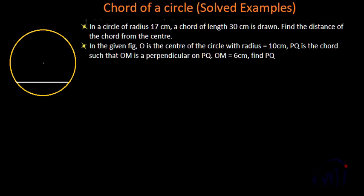First one is: in a circle of radius 17 centimeters, a chord of length 30 centimeters is drawn. Find the distance of the chord from the center.